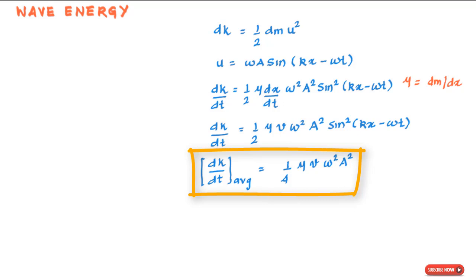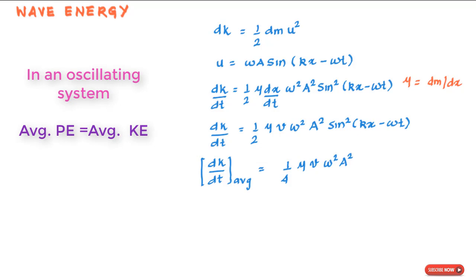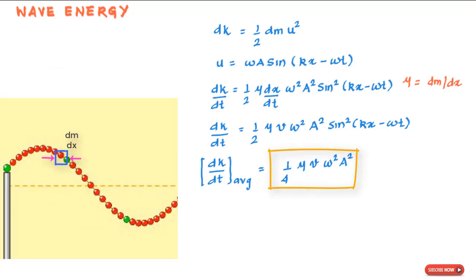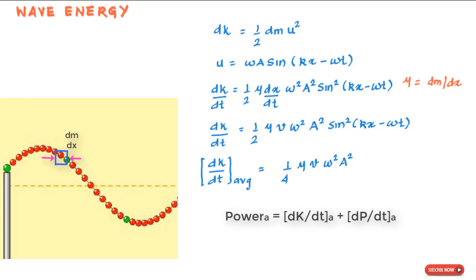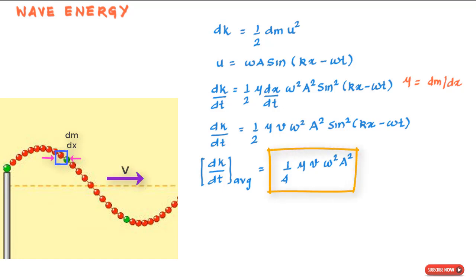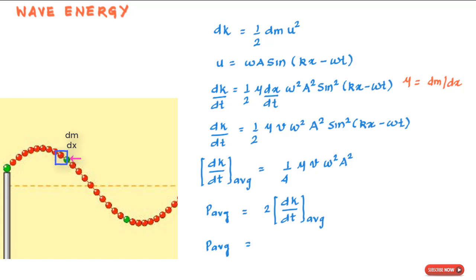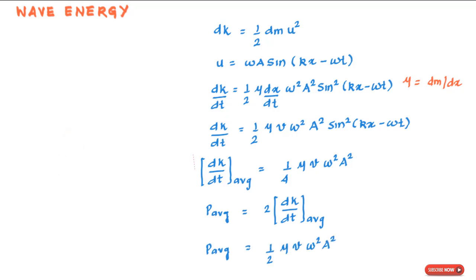We can derive the elastic potential energy similarly, but recall that in an oscillating system such as a pendulum, the average kinetic energy equals the average potential energy. So the average potential energy of this small mass equals the average kinetic energy. Therefore, the average power — the average rate of total energy transmission — is twice the average kinetic energy rate: P_avg = 2 × (dK/dt)_avg.